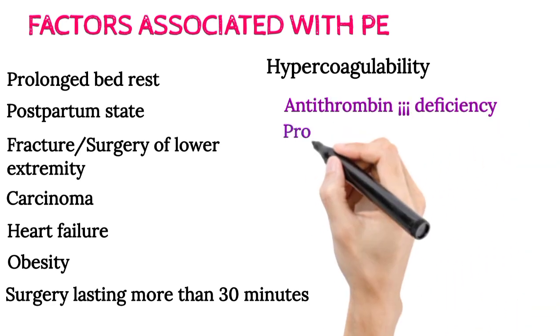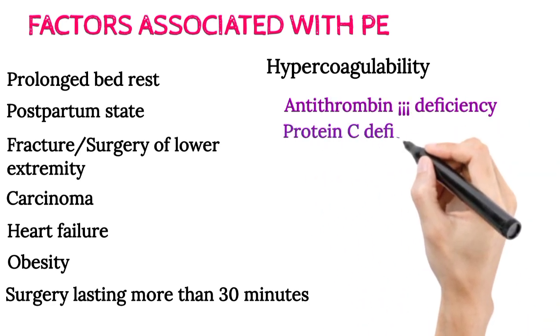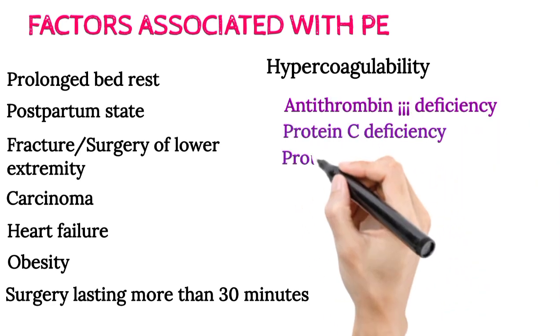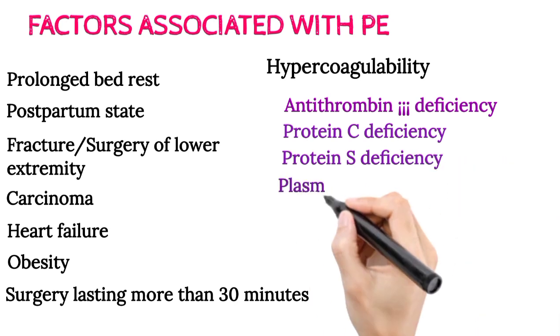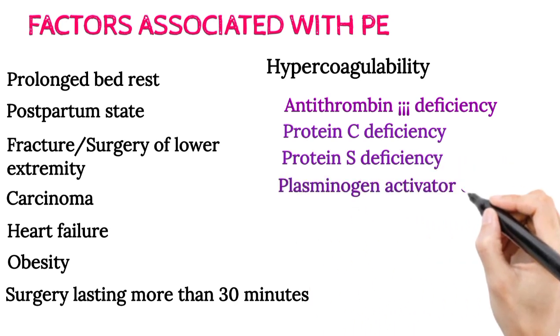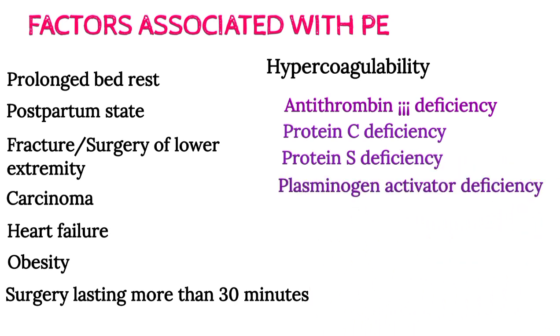Hypercoagulable conditions associated with pulmonary embolism include: antithrombin 3 deficiency, protein C deficiency, protein S deficiency, and plasminogen activator deficiency.